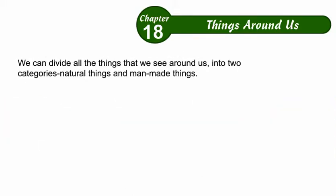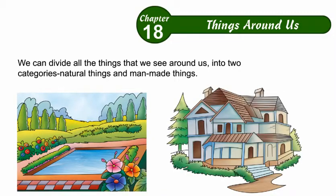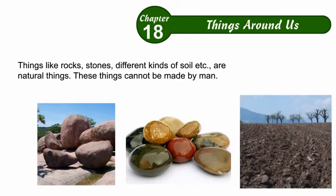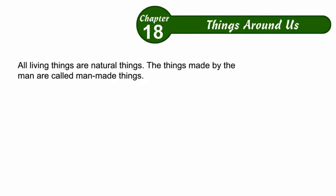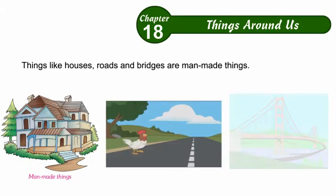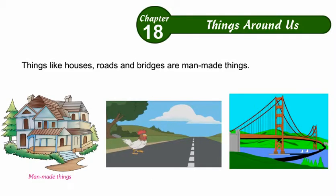We can divide all the things that we see around us into two categories: natural things and man-made things. Things like rocks, stones, different kinds of soil, etc. are natural things. These things cannot be made by man. All living things are natural things. The things made by man are called man-made things. Things like houses, roads and bridges are man-made things.